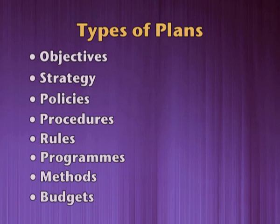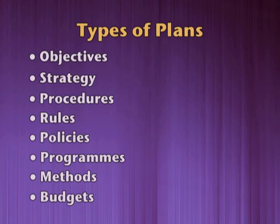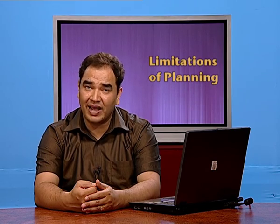These are the major types of plans which an organization must draw — objectives, strategy, procedures, rules, policy, programs, methods, and budgets — as they help in generating income and ultimately attaining the goals and objectives of the organization. We have now come to the end of this episode. In our next episode we will be discussing the limitations of planning. Thank you.